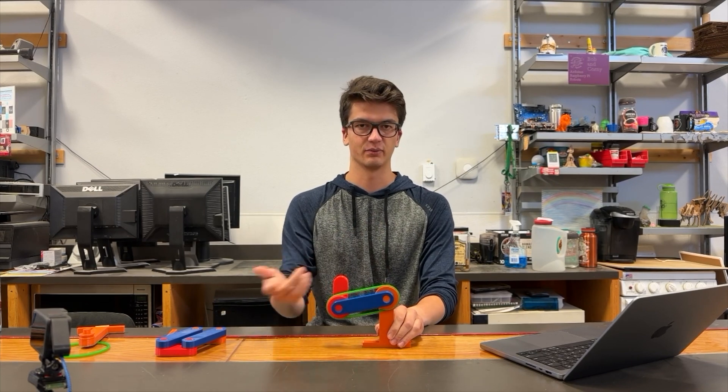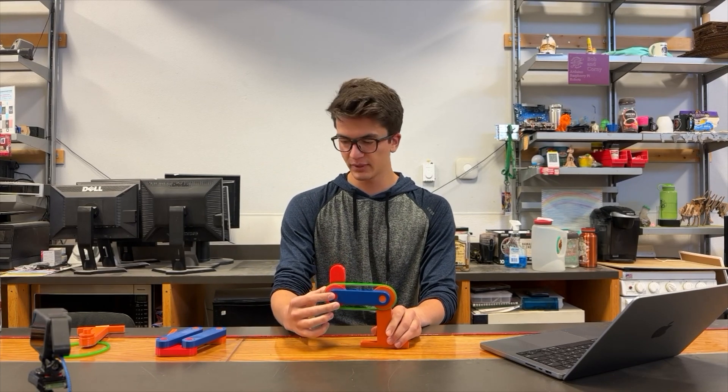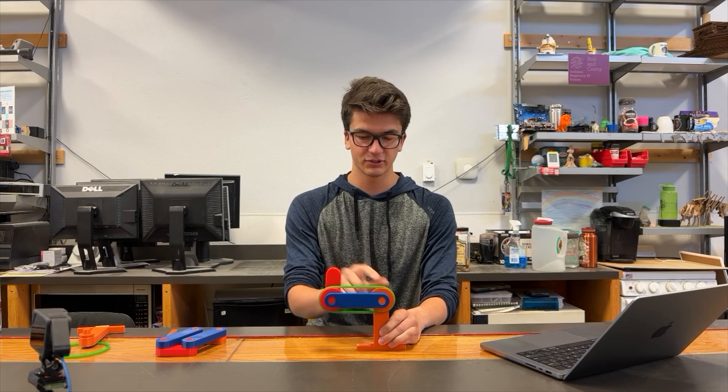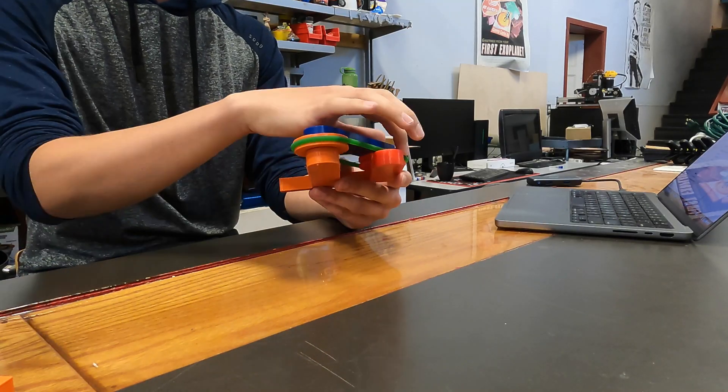In fact, you can also do multiple rotations if that is of use. And so the way this works is, instead of having a second linkage, there's two pulleys that are the same diameter, and then there's a belt connecting them.